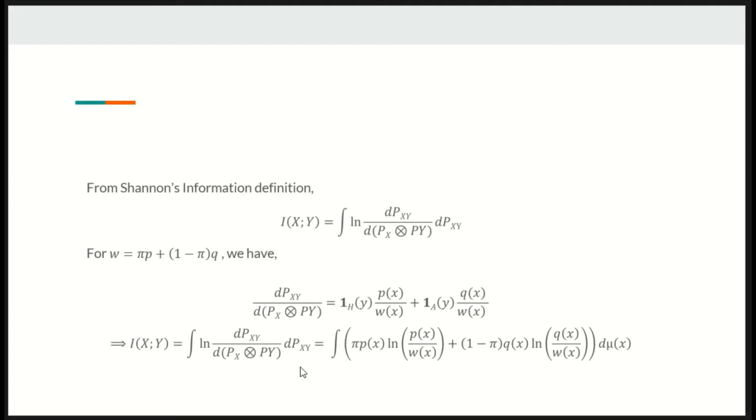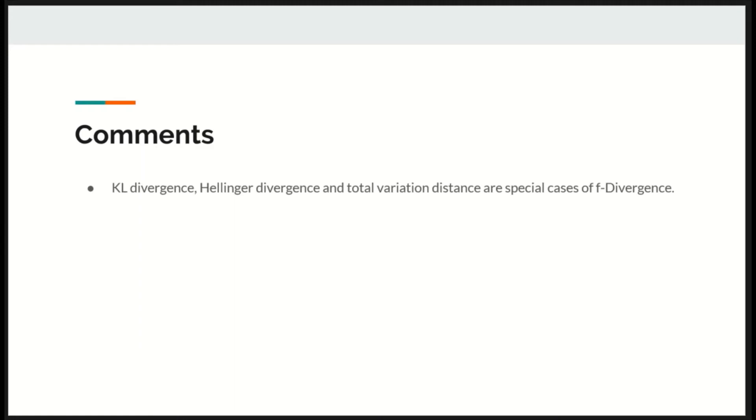Integrating this, we get the mutual information as the following. After simplification, we see that the mutual information is nothing but the F_pi divergence between P and Q, which is what we stated earlier.